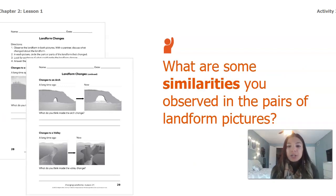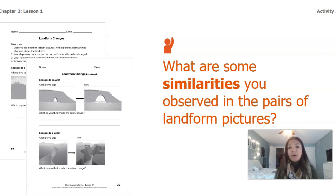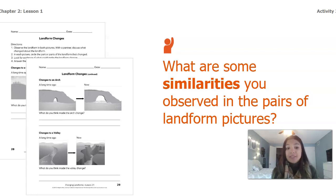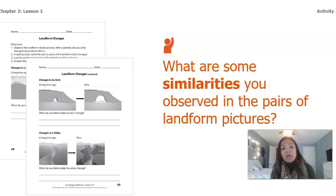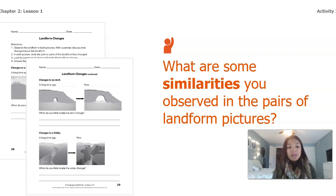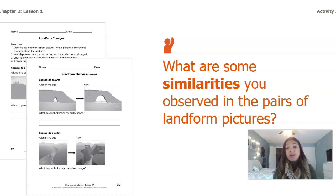What are some similarities you observed in the pairs of landform pictures? One thing that's the same is both landforms are made of rock — all landforms are made of rock. Something else that's similar is that both landforms have some sort of water: the arch is on top of water, and the valley has water running through the middle. And finally, they both have some sort of an opening — the arch has an opening like an upside-down U, and the valley has an opening like a V.